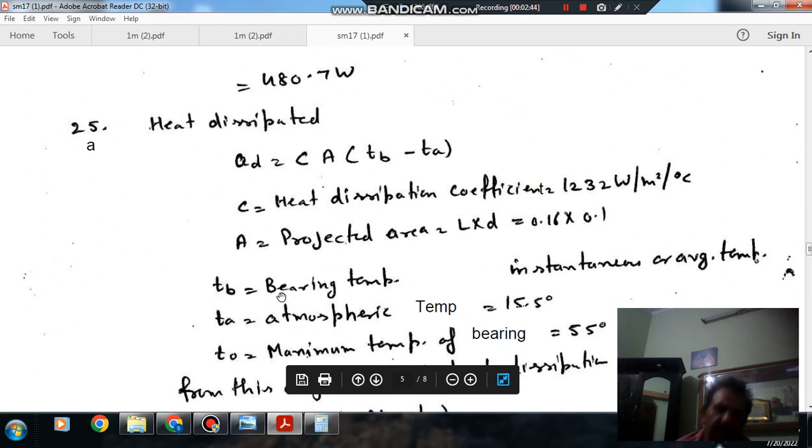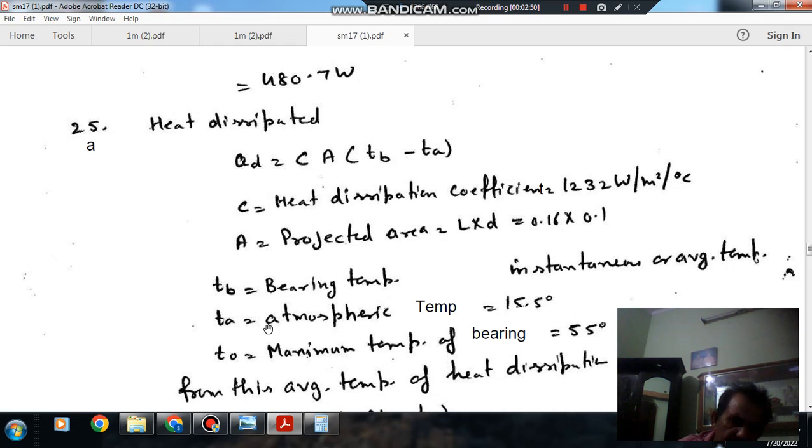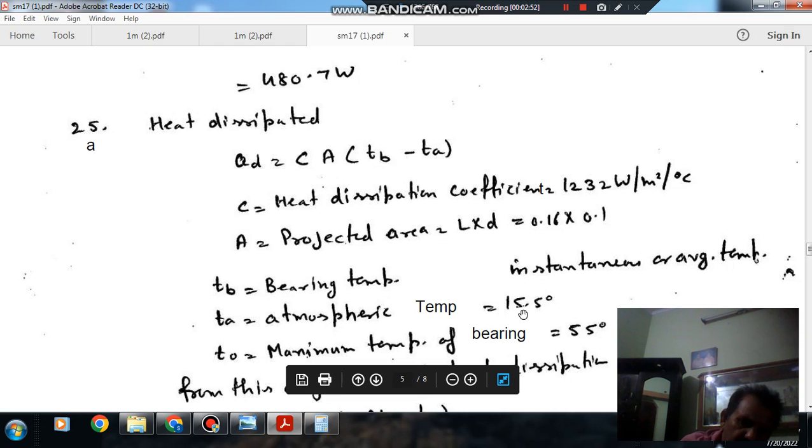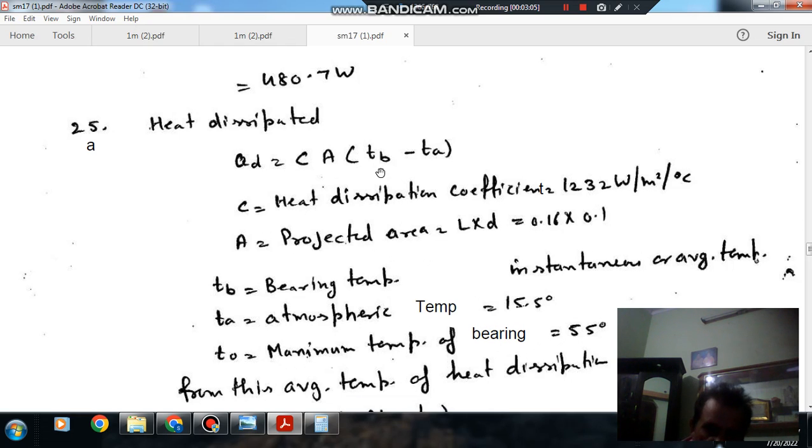And TB is bearing temperature or you can say it is average temperature, and TA is atmospheric temperature that is 15 degree Celsius. And maximum temperature of the bearing is given as 55 degrees Celsius. As during operation the temperature of the bearing keeps changing, we will take TB.